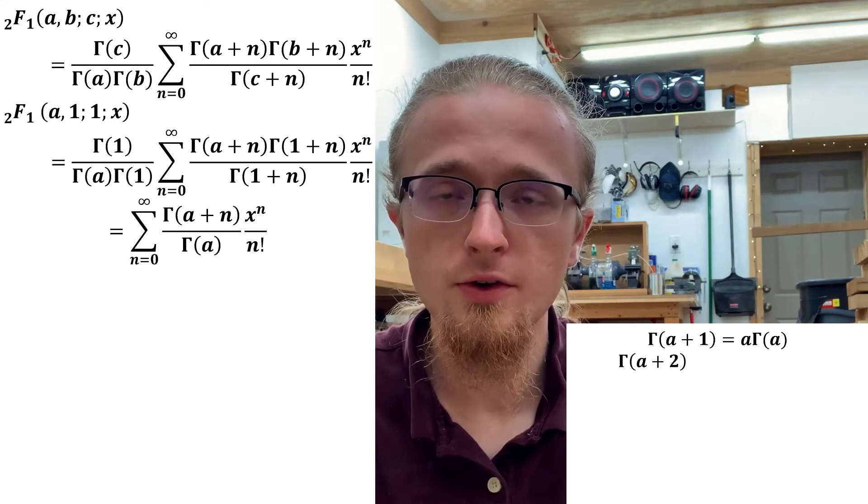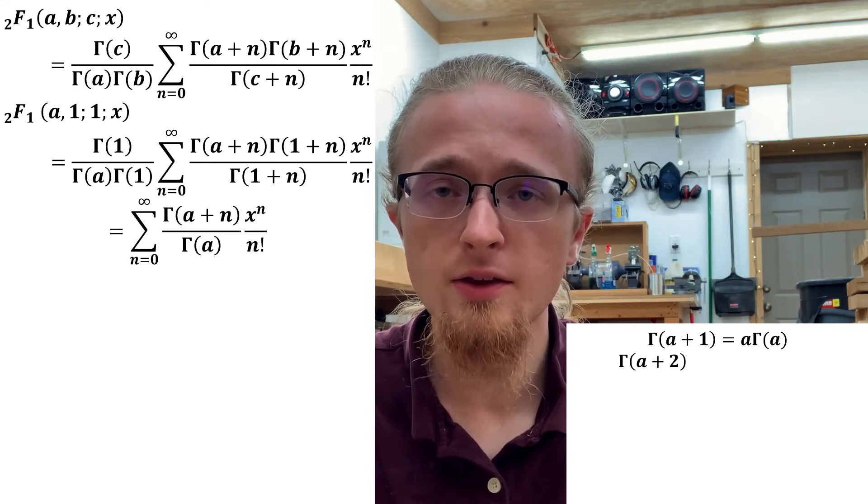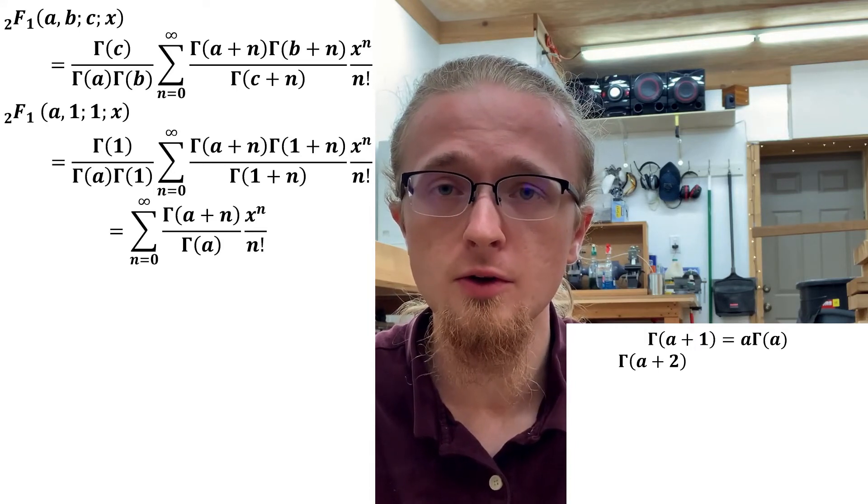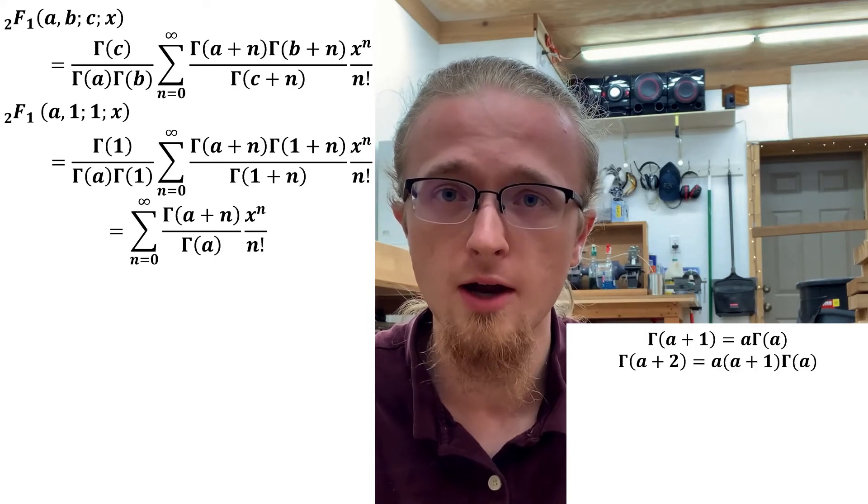We can work out what this equals in terms of Γ(a) by applying the identity we just recalled twice. Specifically, we get that Γ(a + 2) = a(a + 1)Γ(a).